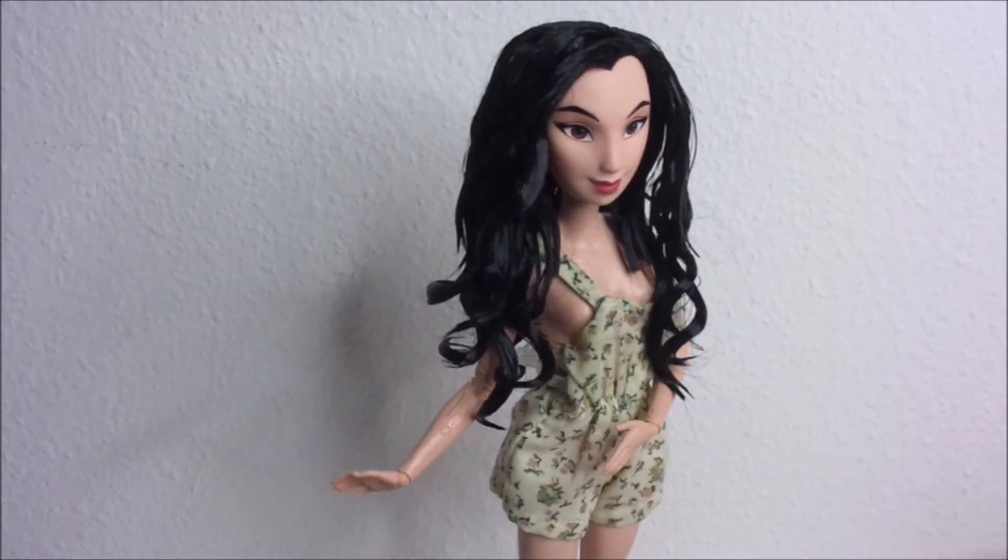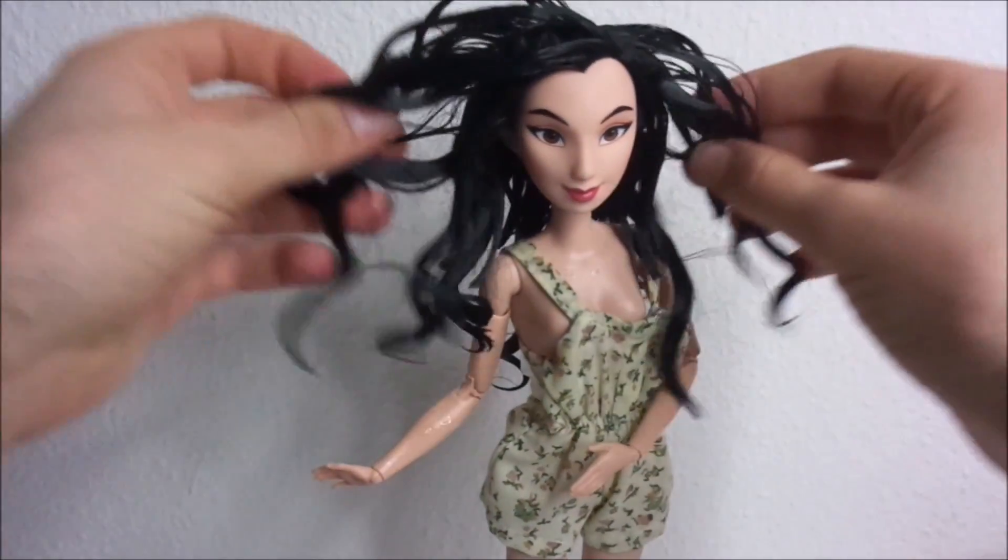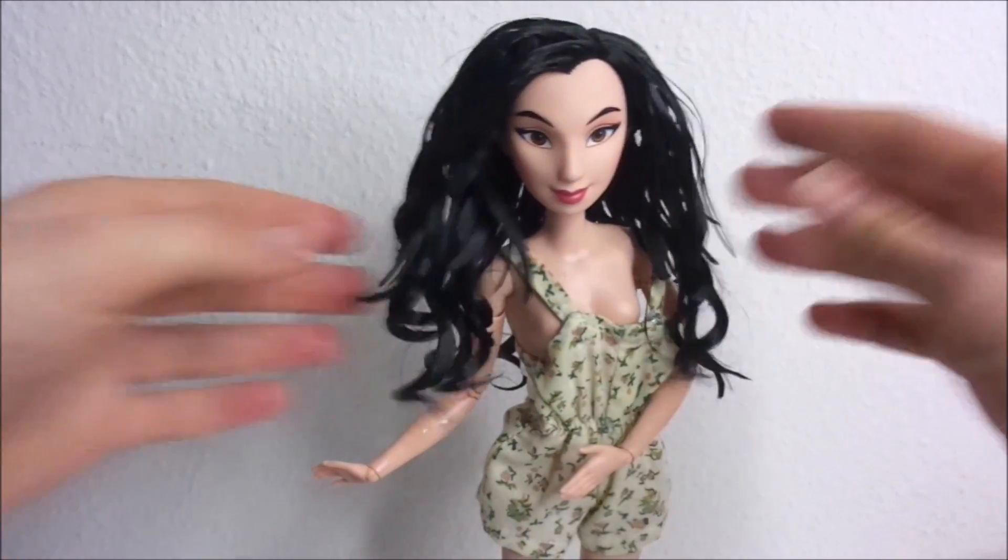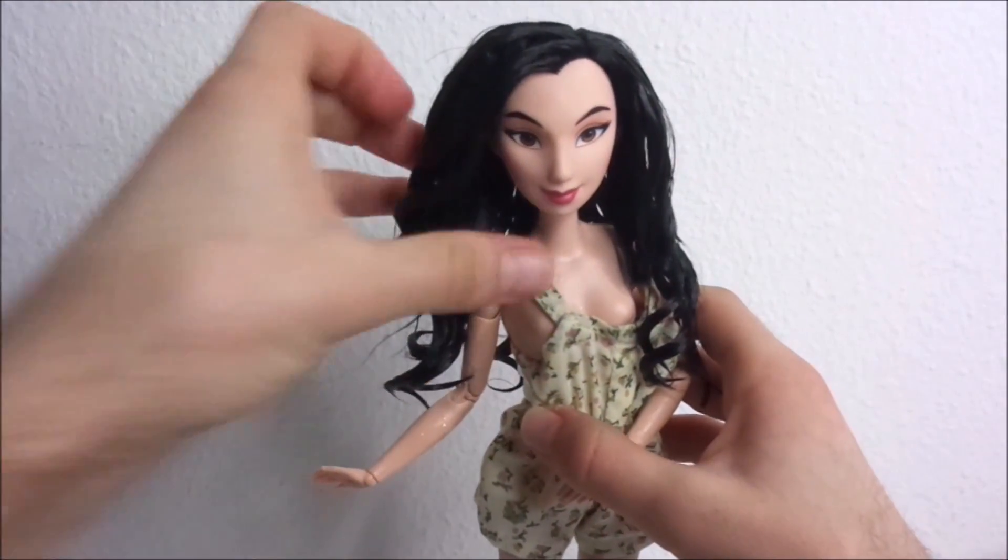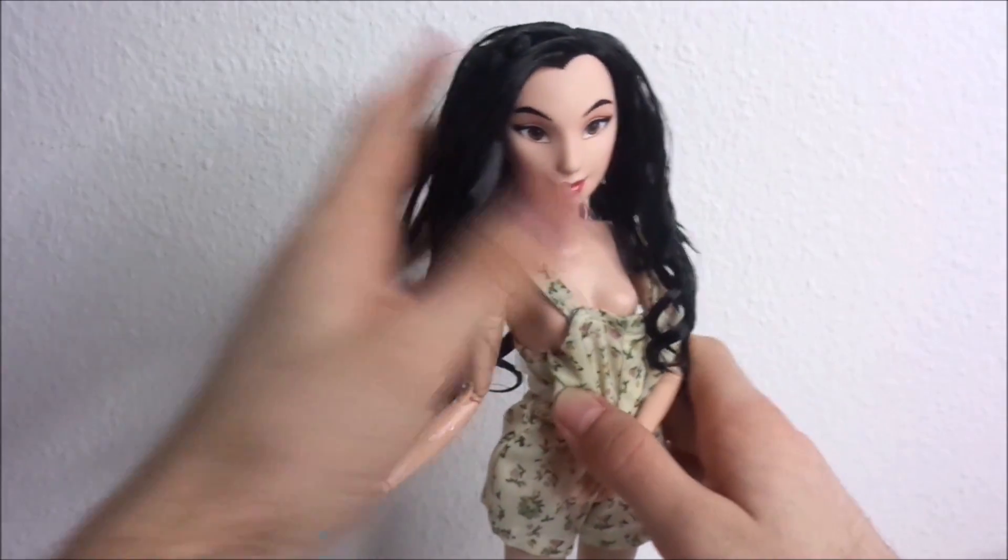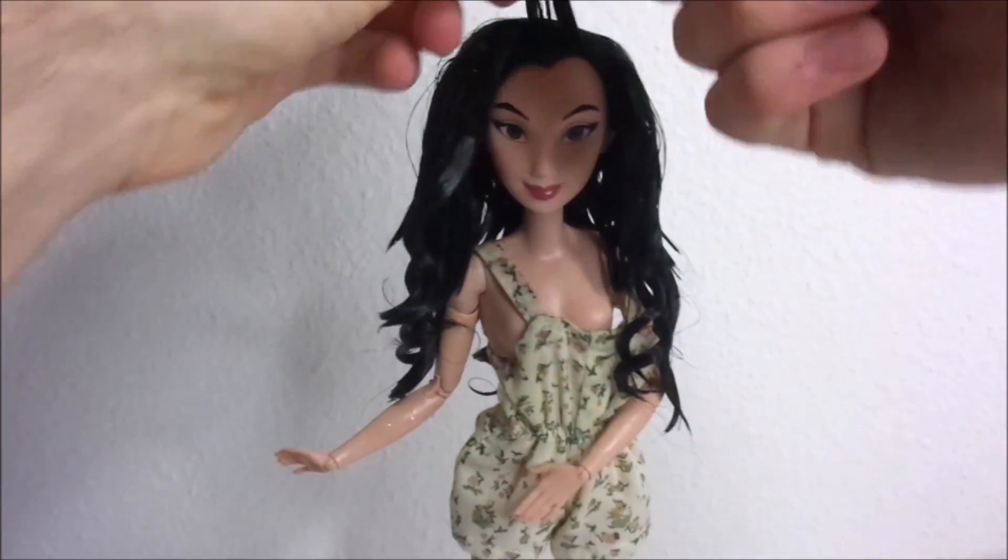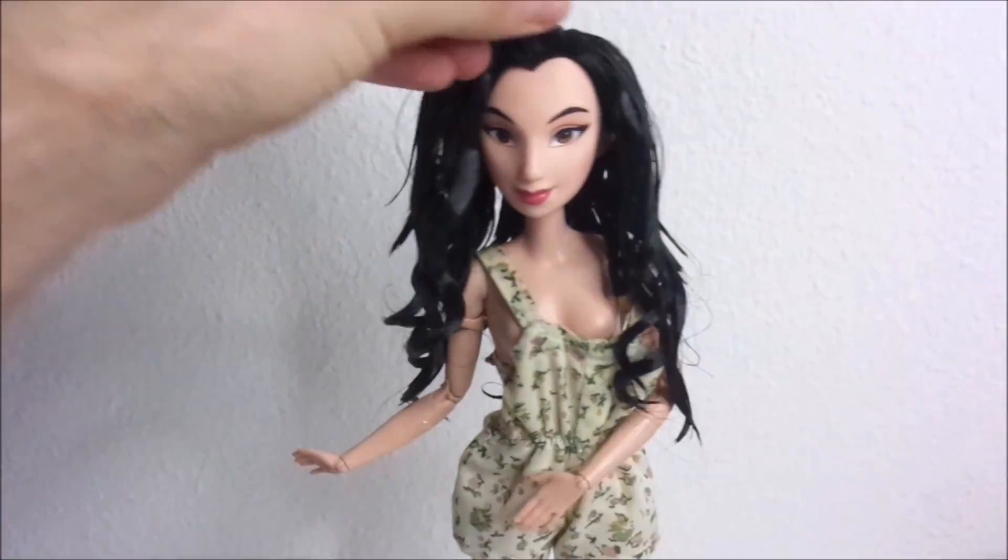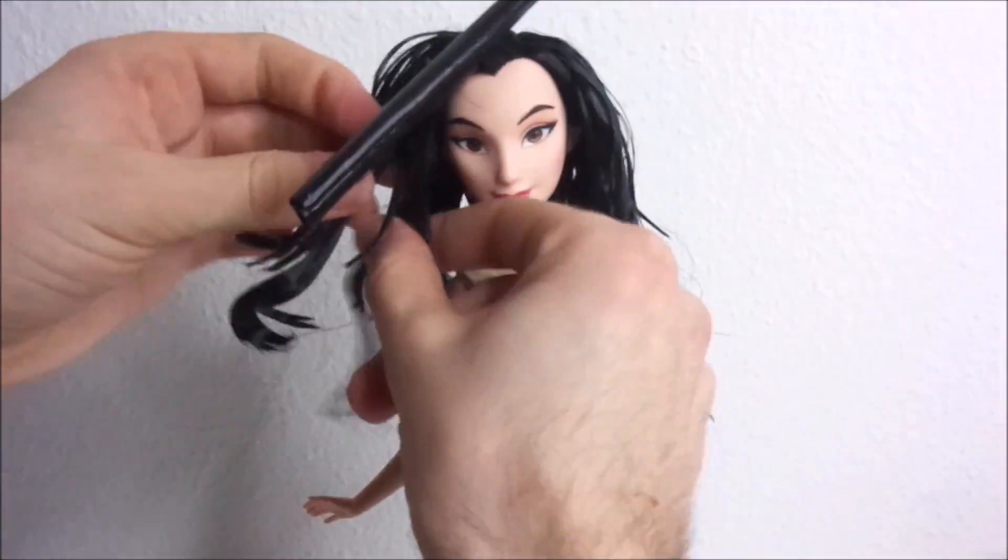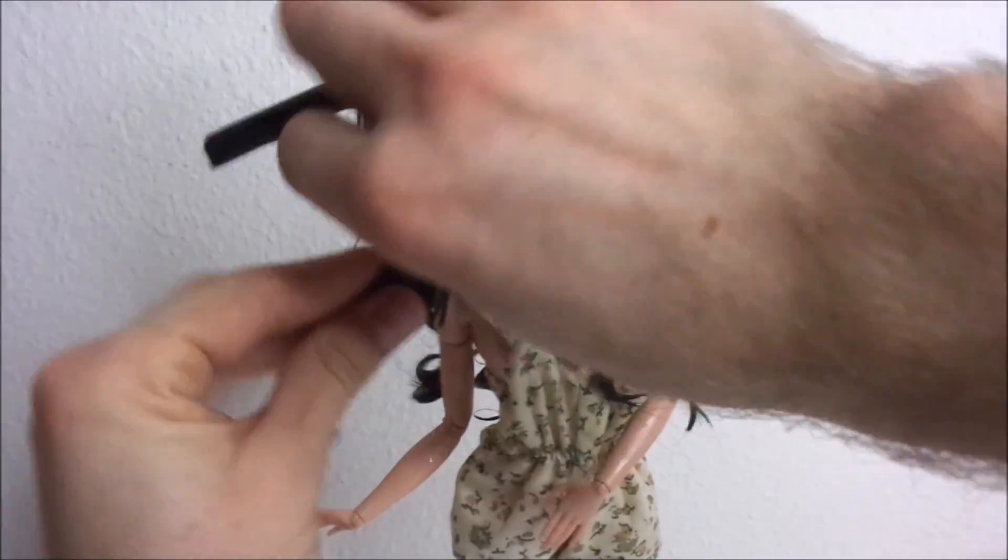Then after all the extensions are in, I like to wet all of the hair because that makes sure the rooted hair and the extensions dry together. To make it blend even better I curl some of the rooted hair as well to give it a similar texture like the extensions.